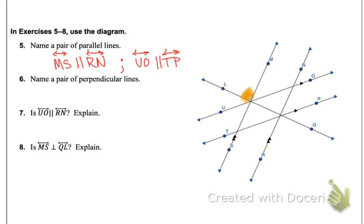So then for perpendicular, that's what that symbol right there means. So we're going to name those two lines that are intersecting there. And that would be line MS is perpendicular to line LQ. On number seven, they're asking us, is UO parallel to RN? So there's UO and RN. They intersect there. So they are not going to be parallel because they intersect.